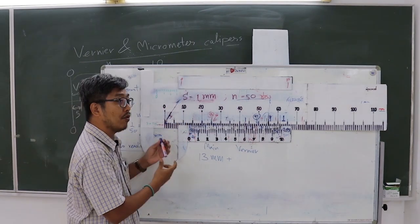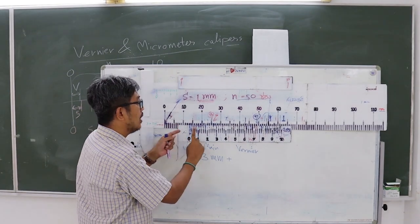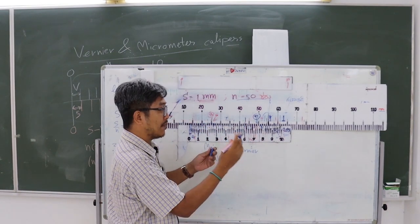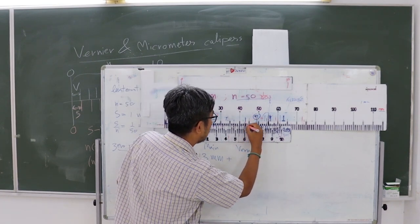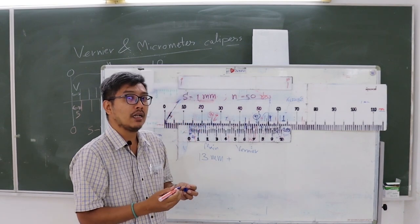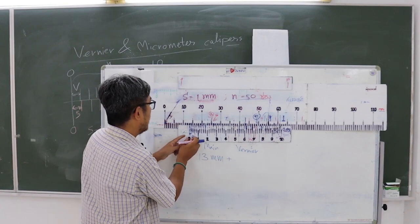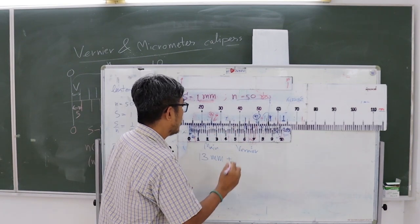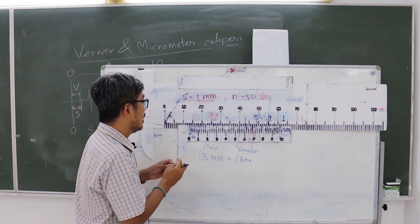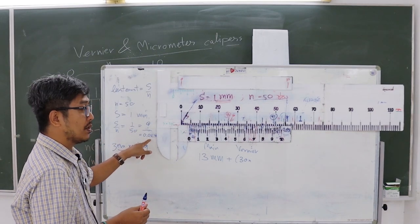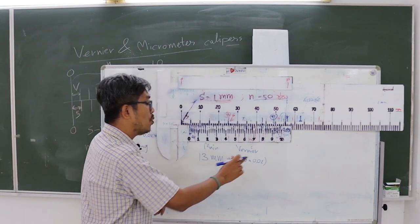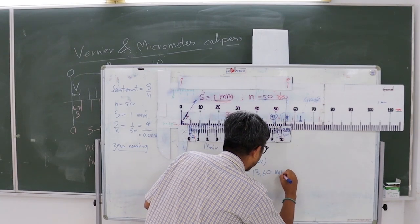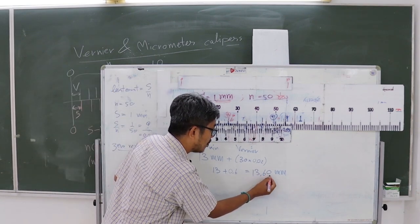Then we add the value from the vernier scale. To read the vernier scale, we find the single line on the vernier scale that is aligned with a single line on the main scale. We count the number of vernier scale divisions to that aligned line, including all small divisions. After counting, the actual number of vernier scale divisions is 30. The vernier scale value is the number of vernier divisions times the least count: 30 times 0.02 mm equals 0.60 mm. The final value is the sum of main scale and vernier scale: 13 mm plus 0.60 mm equals 13.60 mm.